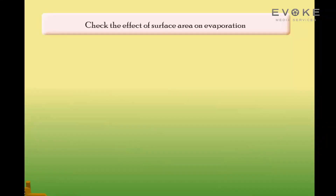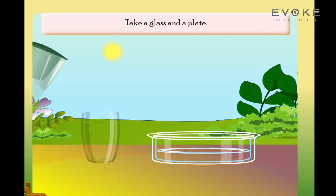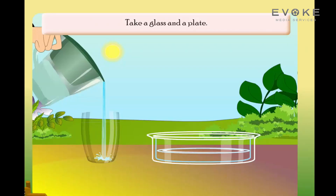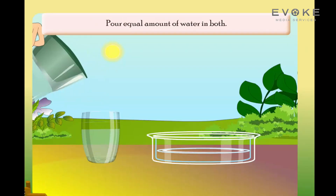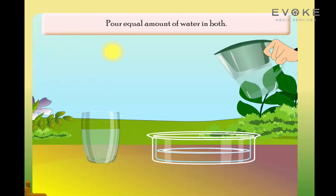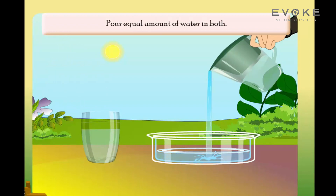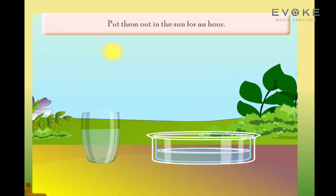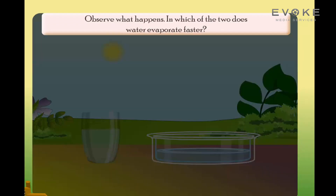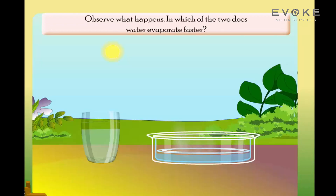To check the effect of surface area on evaporation, take a glass and a plate. Pour equal amount of water in both. Put them out in the sun for an hour. Observe what happens. In which of the two does water evaporate faster?